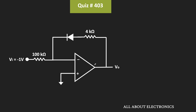First of all, we have been given that the op-amp is an ideal op-amp. That means no current is flowing into the op-amp terminals. And because of the negative feedback, we can apply the concept of the virtual ground. If you notice, the non-inverting terminal of the op-amp is at ground potential. That means the voltage at the inverting terminal will also be equal to 0V.